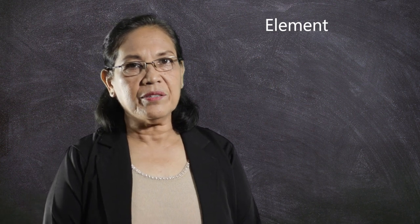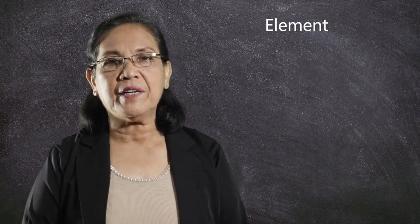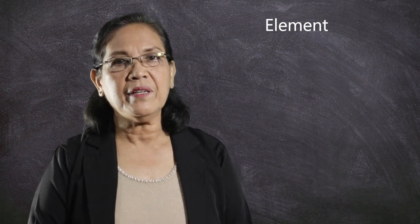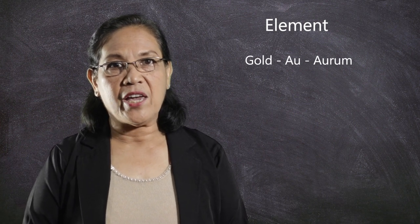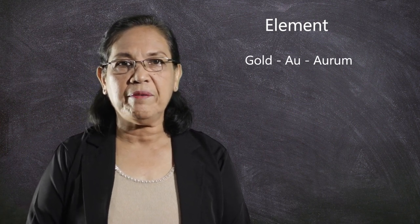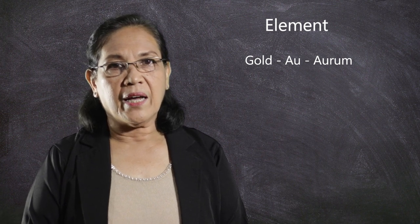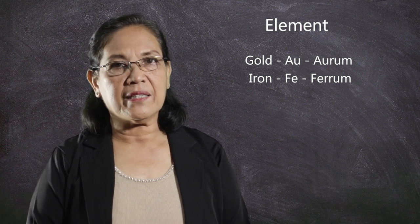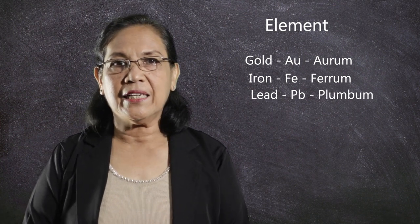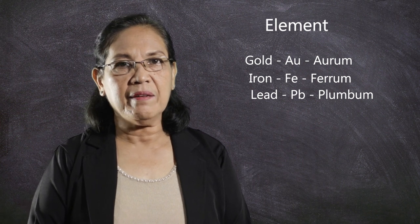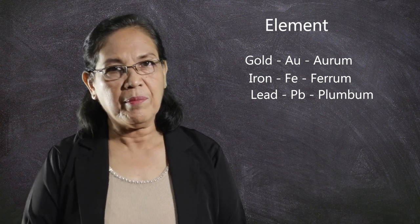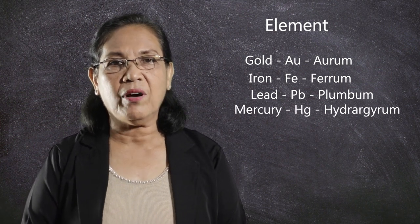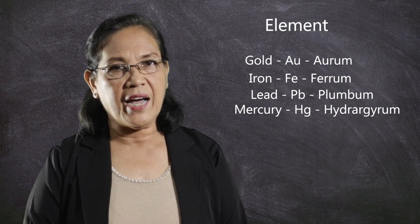And there are also those symbols which are taken from the Latin names of the element. For example, gold has the symbol Au because the Latin name is aurum. Iron has the symbol Fe because the Latin name is ferrum. Lead has the symbol Pb because the Latin name is plumbum. Mercury has the symbol Hg because it is taken from the Latin name hydrargyrum.